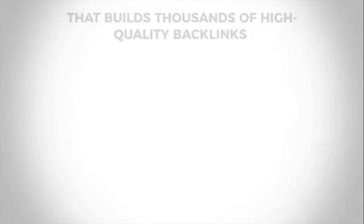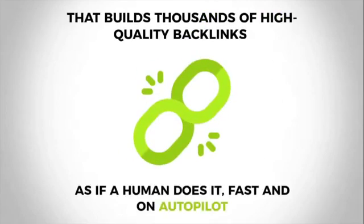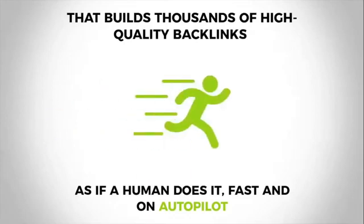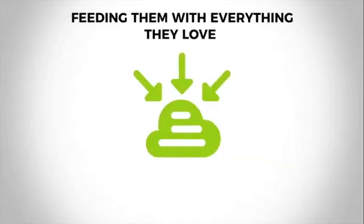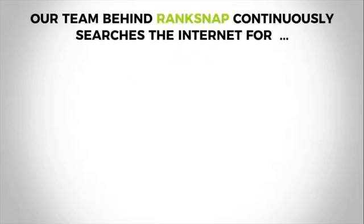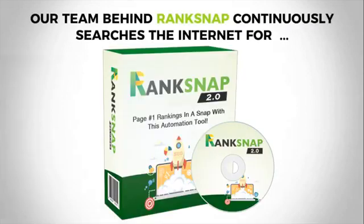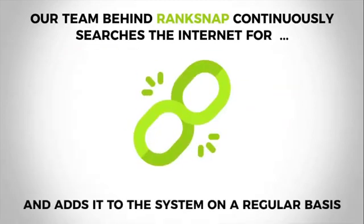RankSnap is an artificial intelligence ranking software that builds thousands of high-quality backlinks as if a human does it for you. It's fast and it's done on autopilot and ranks for harder keywords by giving Google exactly what they want, feeding them with everything they love. And in exchange, you get rankings. Not only that, our team behind RankSnap continuously searches the internet for new high-quality backlink opportunities and adds them to the system on a regular basis.